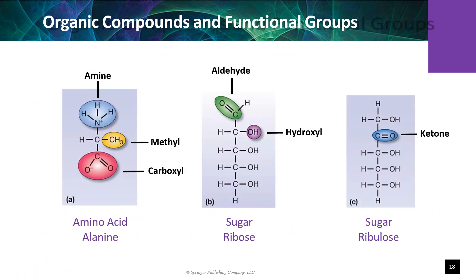Molecules contain common functional groups. The amino acid alanine shows a methyl group in yellow, the amino group in blue, and the carboxylic group in red. The addition of one or more methyl groups adds a non-polar hydrophobic region. The ribose molecule shows an aldehyde group in green and a hydroxyl group in purple. Adding an additional hydroxyl group creates a larger polar hydrophilic molecule, which is a carbohydrate.